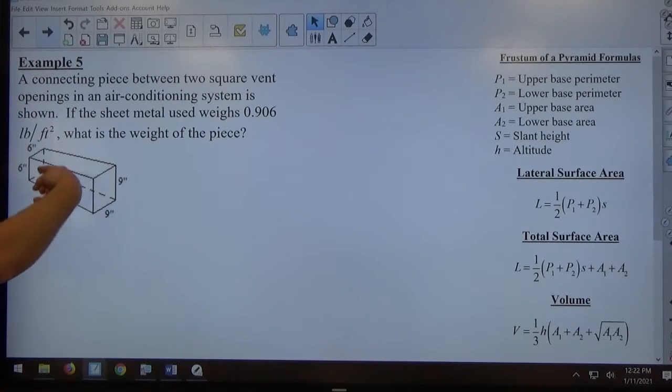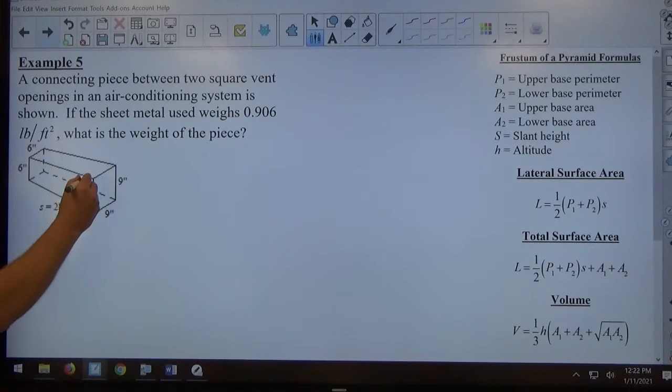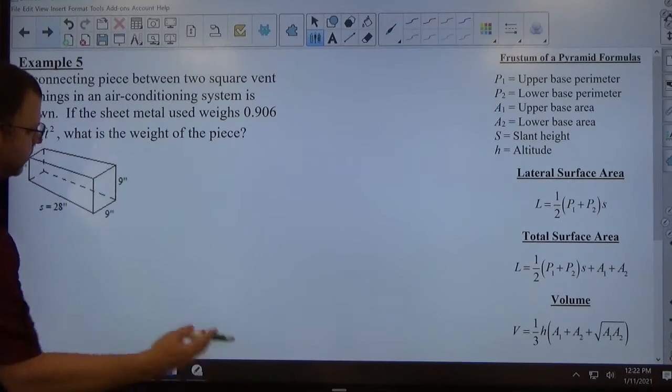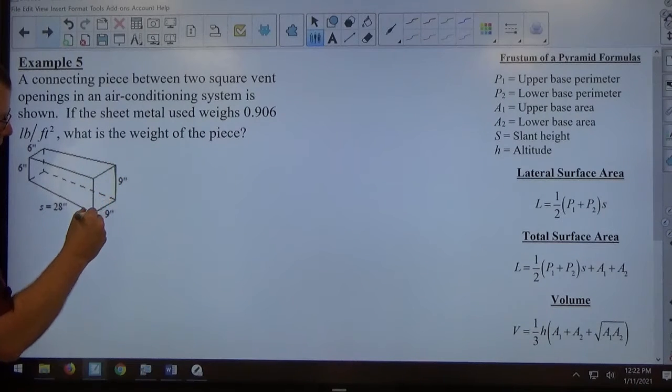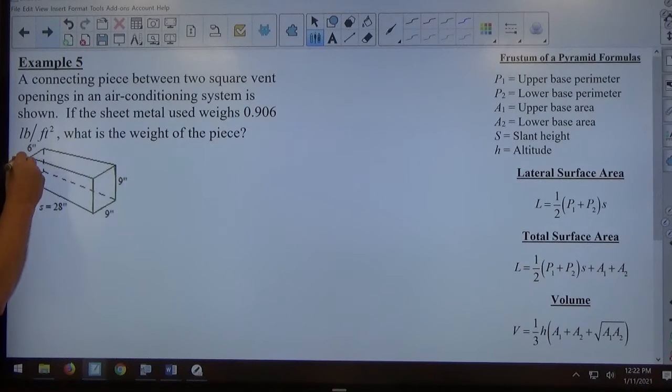So what we're looking at here is the lateral surface area of this thing. As far as the shape is concerned, this is a 9 inch by 9 inch square here. This ends a 9 inch by 9 inch square, where this end over here is only a 6 inch by 6 inch square, which tells me that this is the frustum of a pyramid.